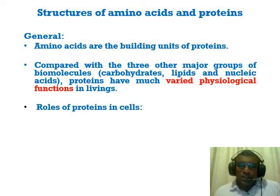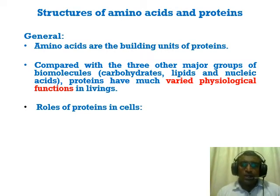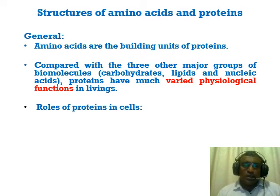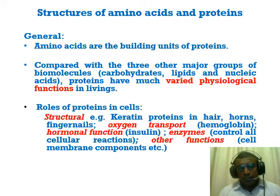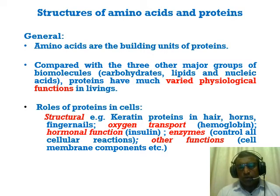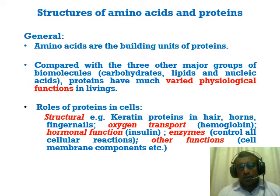Amino acids are the building units of protein. There are actually 20 important amino acids used to make many types of proteins. Protein has the most number of functions, which is why it's called the workhorse macromolecule. Some functions include making up structures such as the protein keratin, found in hair, horns, and fingernails — these are all continuously growing even after you cut them.